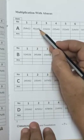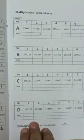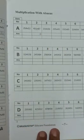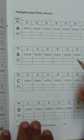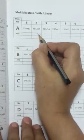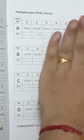8 ones are 8 and 5 into 7. So 7, 5 is 35. So 8 plus 35 is 43. We write down 3 and 4 carry forward.